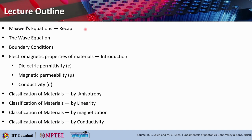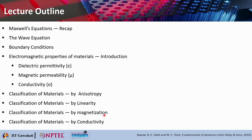Here is the lecture outline: a quick recap of Maxwell's equations that we have seen in the last lecture, how we can derive wave equations from that, and a discussion about boundary conditions. Then we will go into the electromagnetic properties of material — dielectric permittivity epsilon, magnetic permeability mu, and conductivity sigma — and the classification of materials by anisotropy, linearity, magnetization, and conductivity.